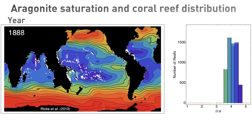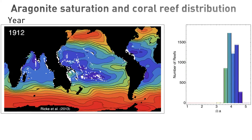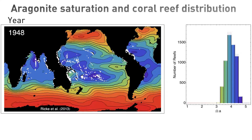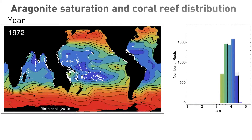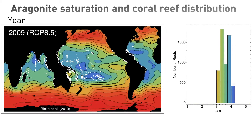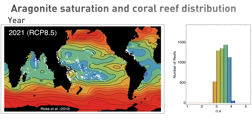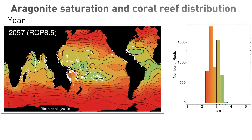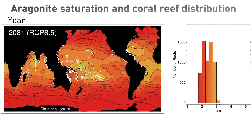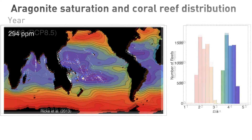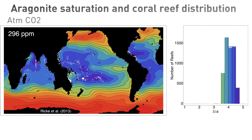This animation shows the ensemble median saturation of aragonite, the form of calcium carbonate corals use to build their skeletons, in the ocean for the CMIP-5 Earth System models. The animation starts around 1860 and projects aragonite saturations out to year 2100 under a business-as-usual scenario, RCP 8.5.